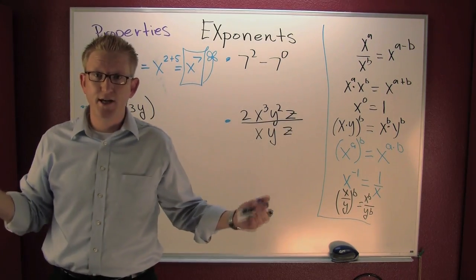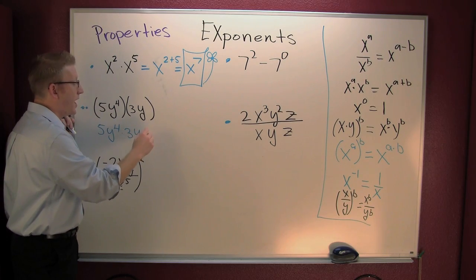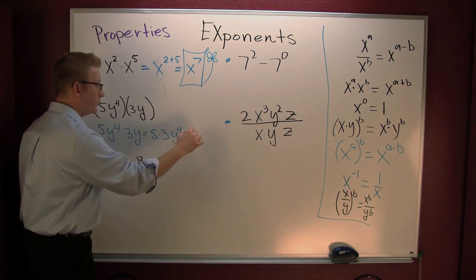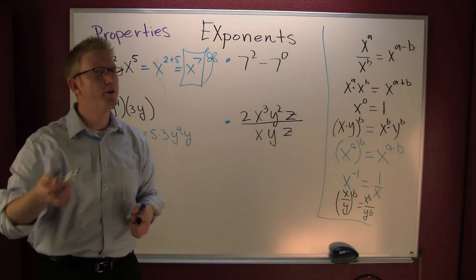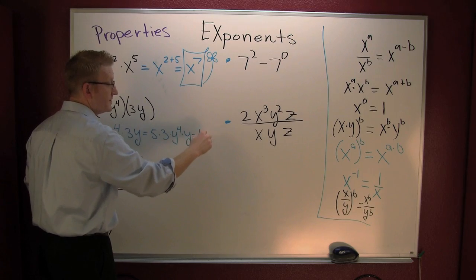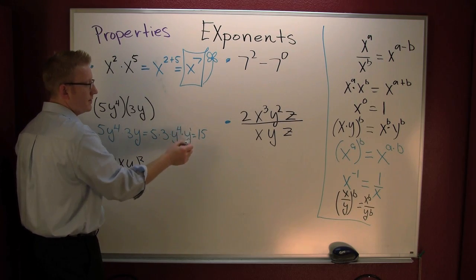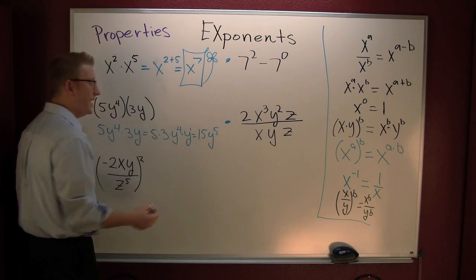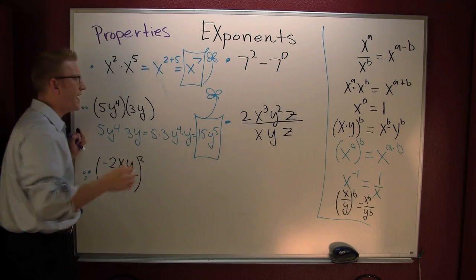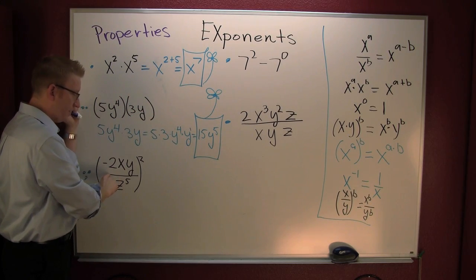Looking at this one — are those parentheses necessary? No. So I can get rid of them. This is 5y to the fourth times 3y. I can commute those, so this could be 5 times 3 times y to the fourth times y. Now I'm putting in a lot of steps here so you can see where they're coming from. What's 5 times 3? Fifteen. What's y to the fourth times y to the first? Same base, multiplying — I add the exponents. Four plus one is five, so y to the fifth. You multiply the numbers in front and add the exponents.